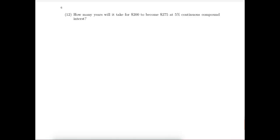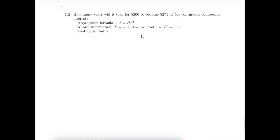That brings us to the final problem of the 12. This is continuous compound interest, so the appropriate formula is A equals PE raised to the RT power. The known information is that the present value is $200, the future value is $275, and the interest rate is 5% compounded continuously. We want to know how long it will take to get that future value. Substitute the known information into the formula. On the right-hand side the last thing being done is multiplying by 200, so let's divide both sides by 200.